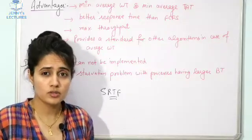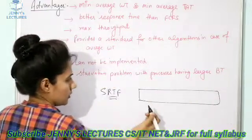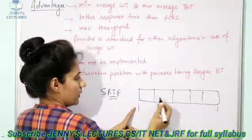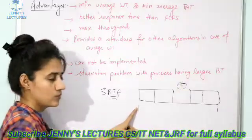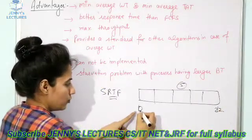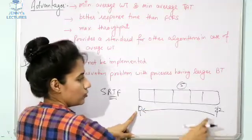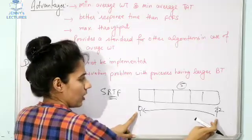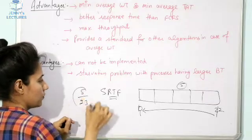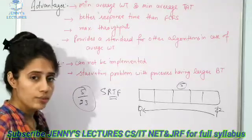The third advantage is it gives maximum throughput. Throughput is the number of processes per unit time. For example, if we draw a Gantt chart from zero to 22 and five processes are completed in 23 units of time, then throughput is 5 divided by 23. SJF gives you the maximum throughput.